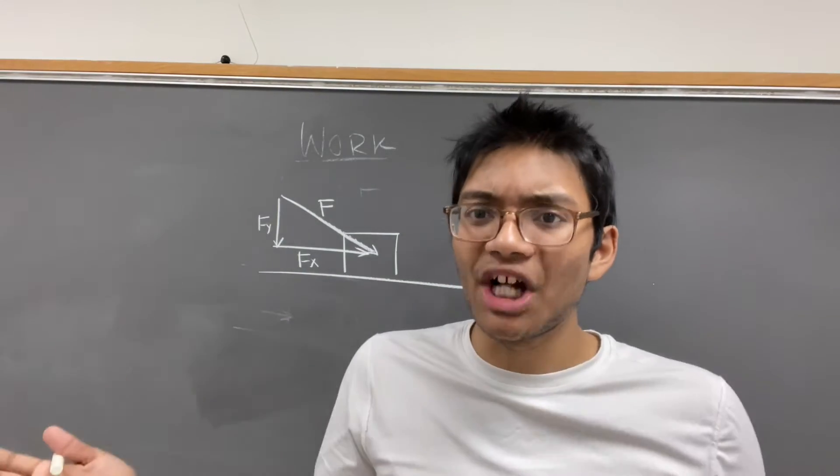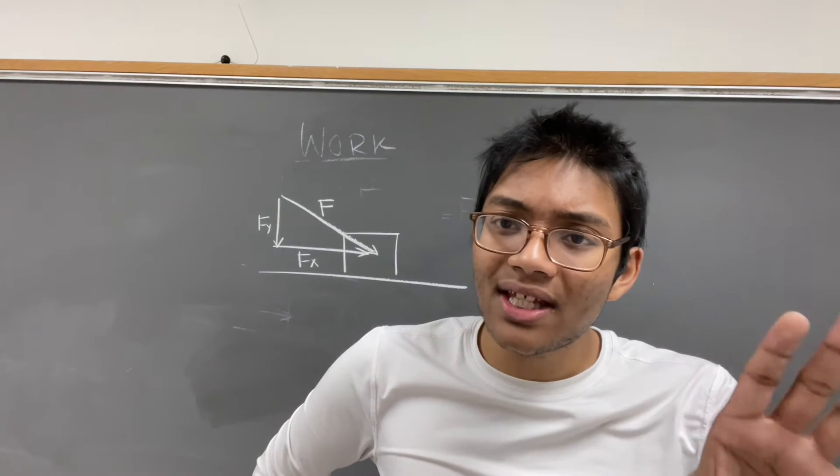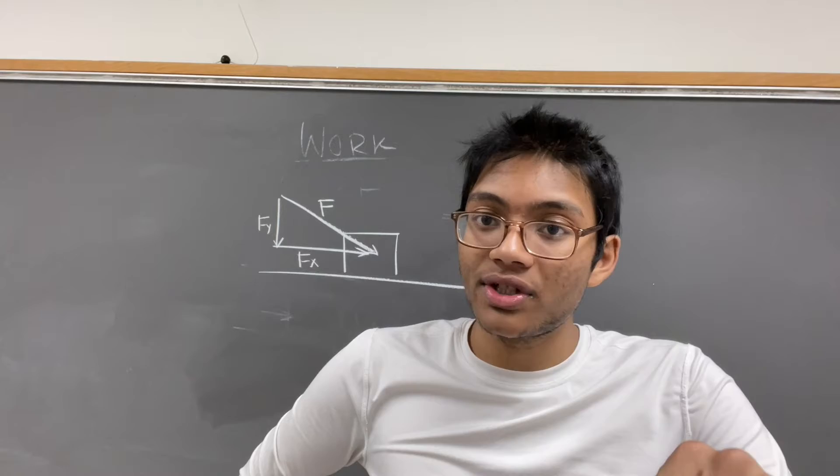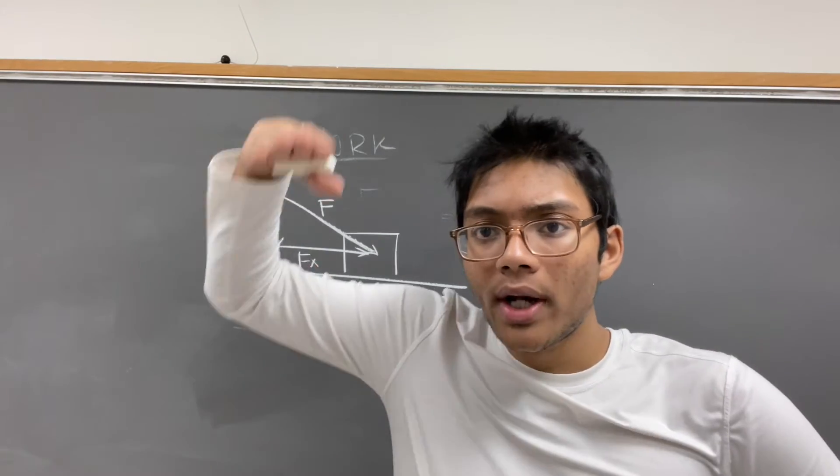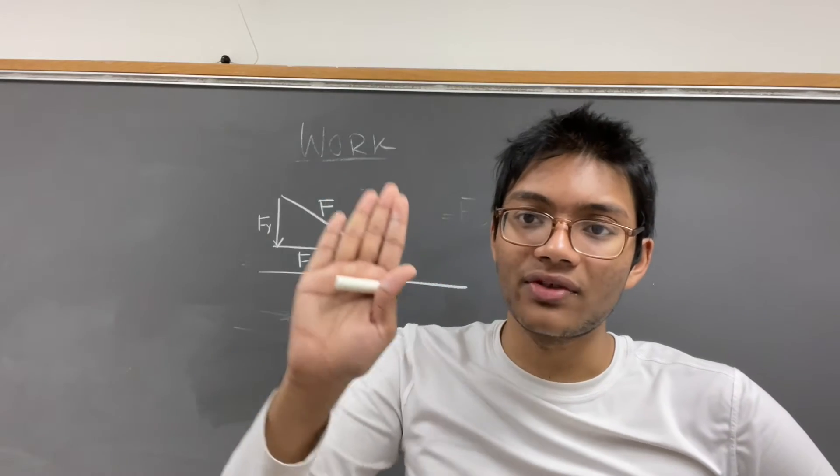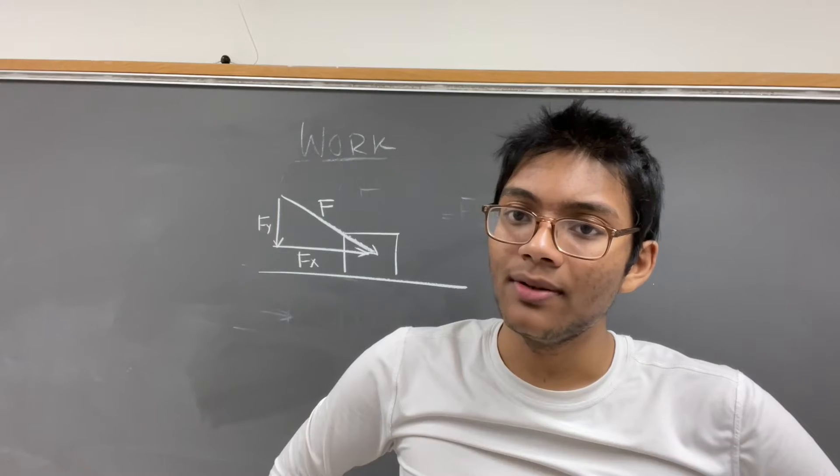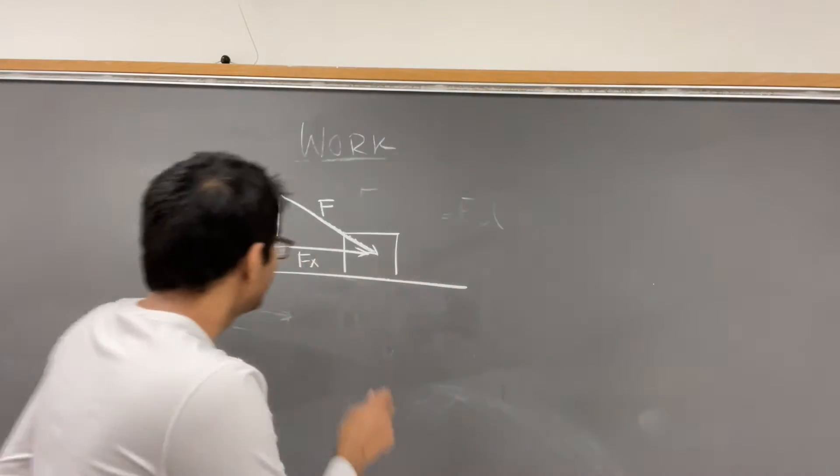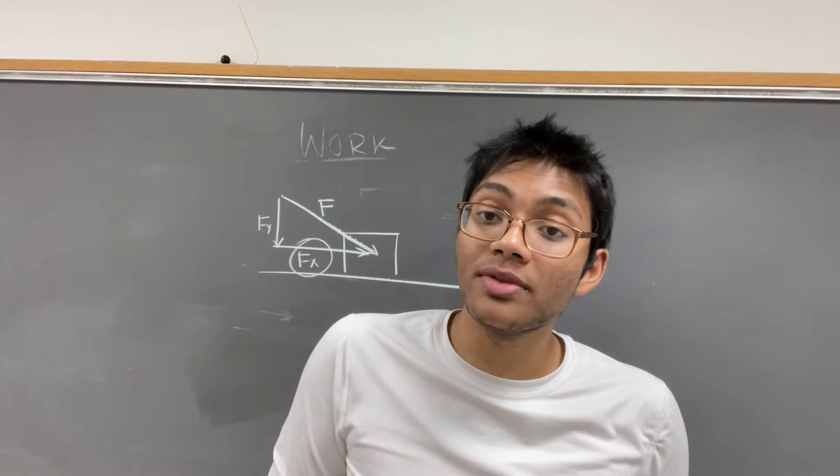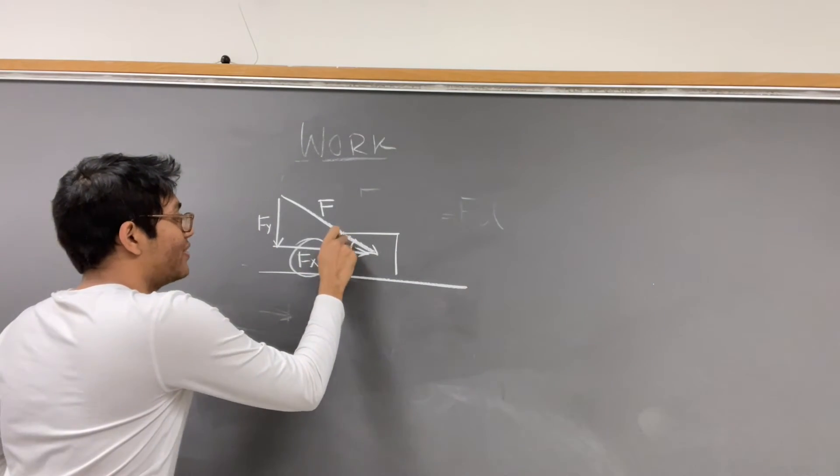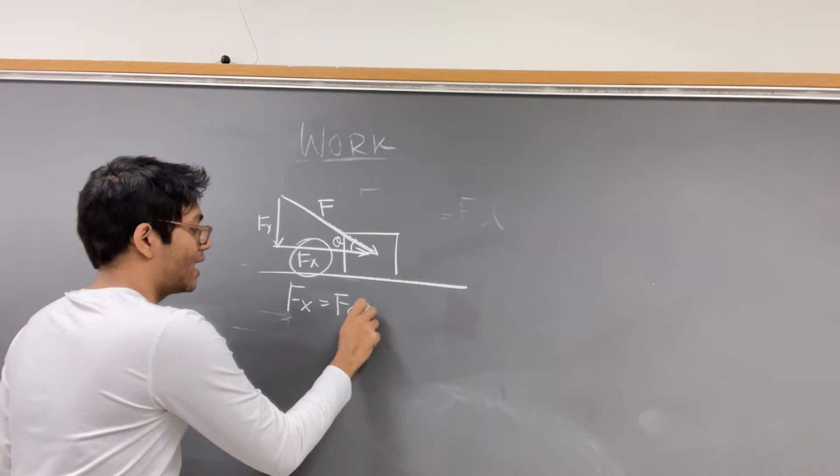Think about it. This force vector can be decomposed into F sub x and F sub y. Which one will change the direction of the box's movement? Which one will move the box at all? F sub x or F sub y? To answer that question, instead of thinking of exerting one force at an angle, think about exerting two different forces. One horizontally, left to right, and one vertically, up and down. Which one will move the box along the table? It's F sub x. And what is F sub x in terms of F? Well, call this angle theta. F sub x is simply F cosine theta.